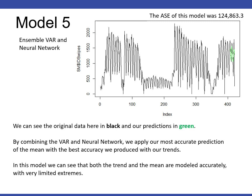For our fifth model, we wanted to see how an ensemble worked of the top models. By combining the VAR and the neural network, we applied the most accurate prediction of the mean with the best accurate prediction of our trend. And this produced the best ASE at 124,000. You can see here, this green is its prediction.